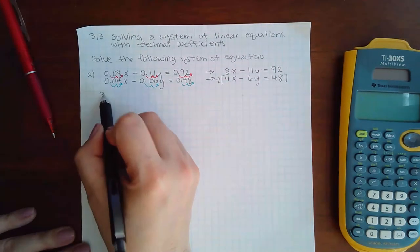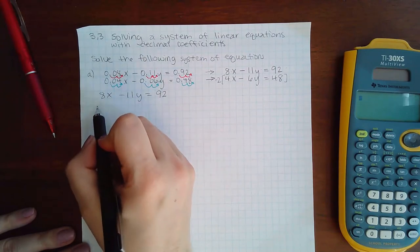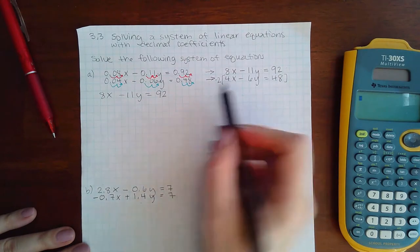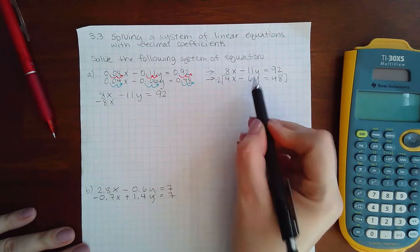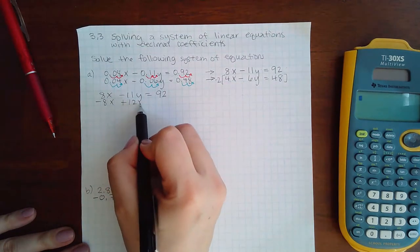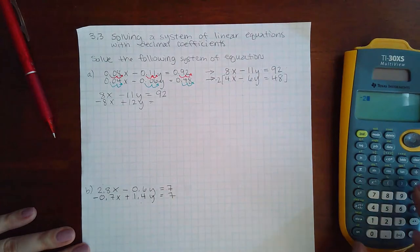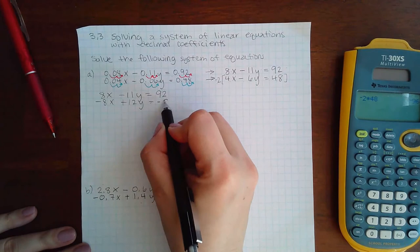So that means I need to rewrite the whole top one. And the more you have to rewrite the chances you are to make a mistake, so always make sure you rewrite correctly. Here I have negative 8x. A negative 2 times a negative 6y will be positive 12y, and the negative 2 times 48 is negative 96.